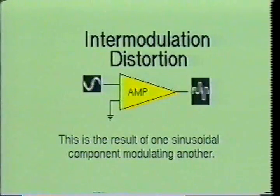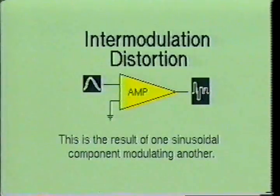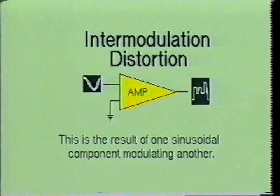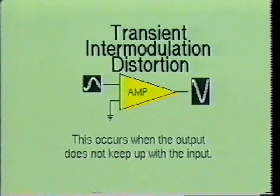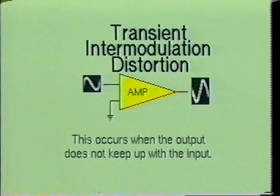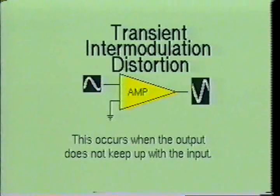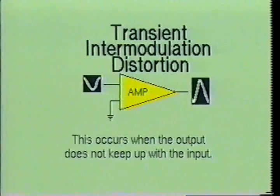Intermodulation distortion is a result of one sinusoidal component modulating another, creating a new frequency which becomes part of the output signal. Transient intermodulation distortion will occur when the input signal changes so rapidly that the amplifier cannot keep up, usually resulting in distortion on the rise time part of the wave shape.